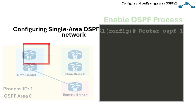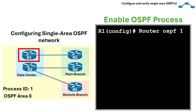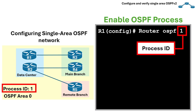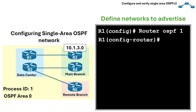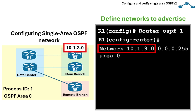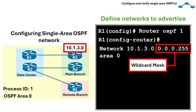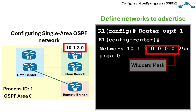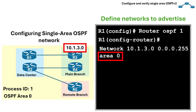To configure OSPF, we use this command to enable the OSPF process on the router, where 1 is the OSPF process ID. The next command defines the networks to advertise. We use this command which tells OSPF which interfaces to enable and which networks to advertise. 0.0.0.255 is the wildcard mask, or the inverse of the subnet mask, and this sets the area ID to 0.